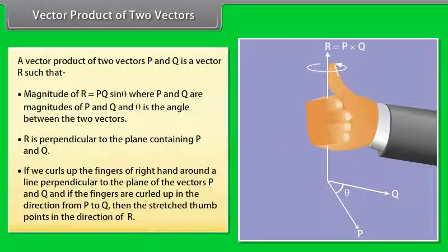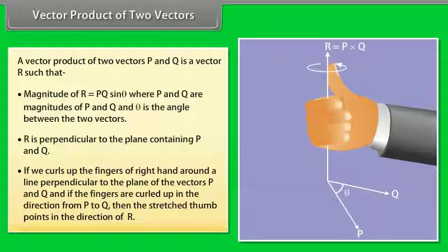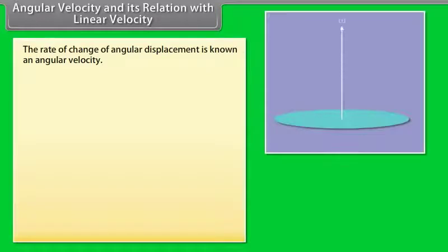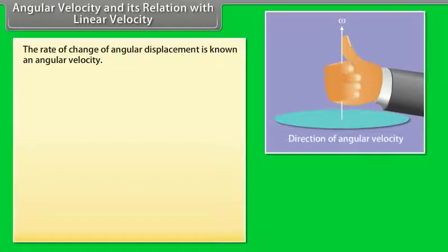A vector product of two vectors p and q is a vector r such that the magnitude of r equals p·q·sinθ, where p and q are the magnitudes of p and q and θ is the angle between them. R is perpendicular to the plane containing p and q. Using the right-hand rule, if the fingers curl from p to q, the stretched thumb points in the direction of r.